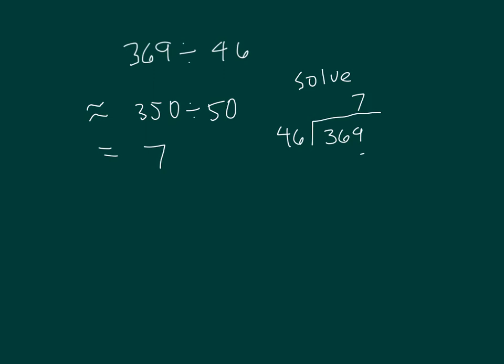7 times 6 is 42, regroup of 4. 7 times 4 is 28, plus 4 is 32. When I subtract that, I actually get 47. While my divisor is 46, so I could actually take out another 46 from there. So my 7 should have been an 8.